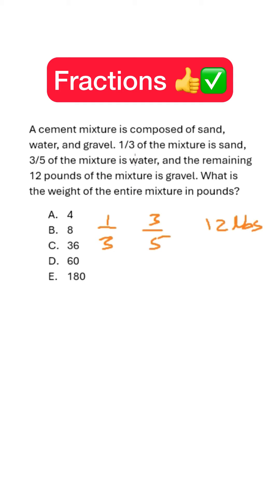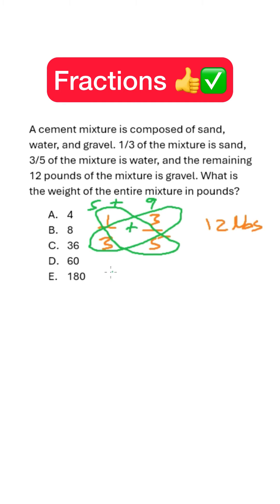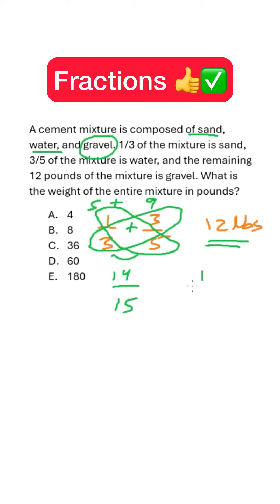Here we have only fractions. Let's add them. Five times three is fifteen — five minus five gives us the numerator for sand: five. Plus three times three is nine. Five plus nine is fourteen, and three times five is fifteen. So fourteen over fifteen is sand and water, and the gribble — twelve pounds — is one fifteenth.